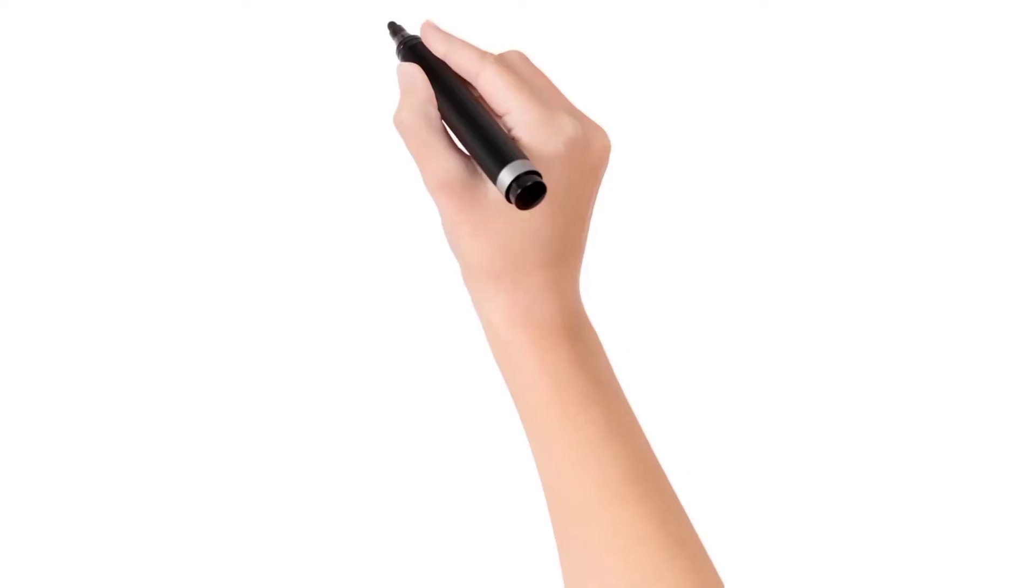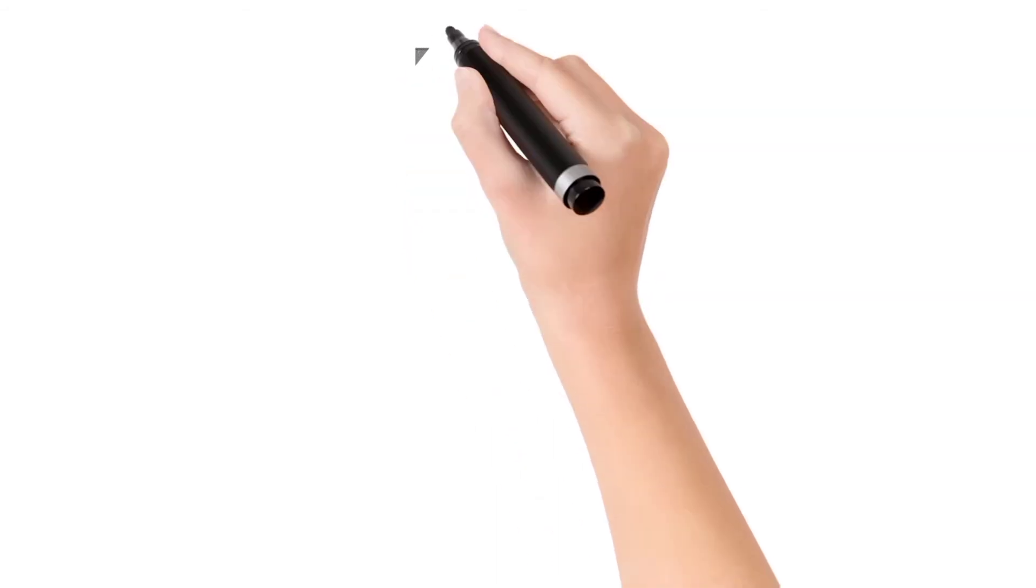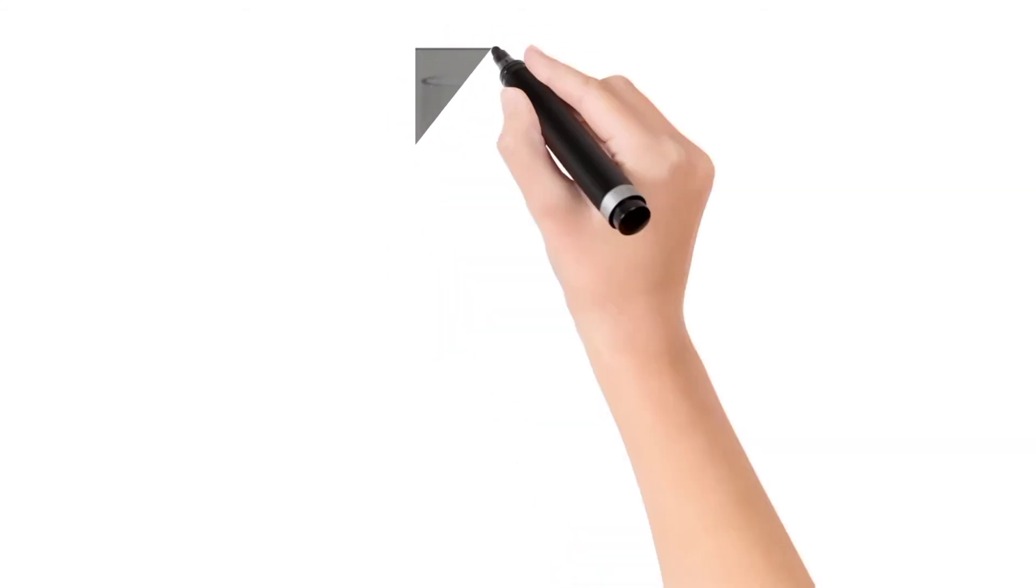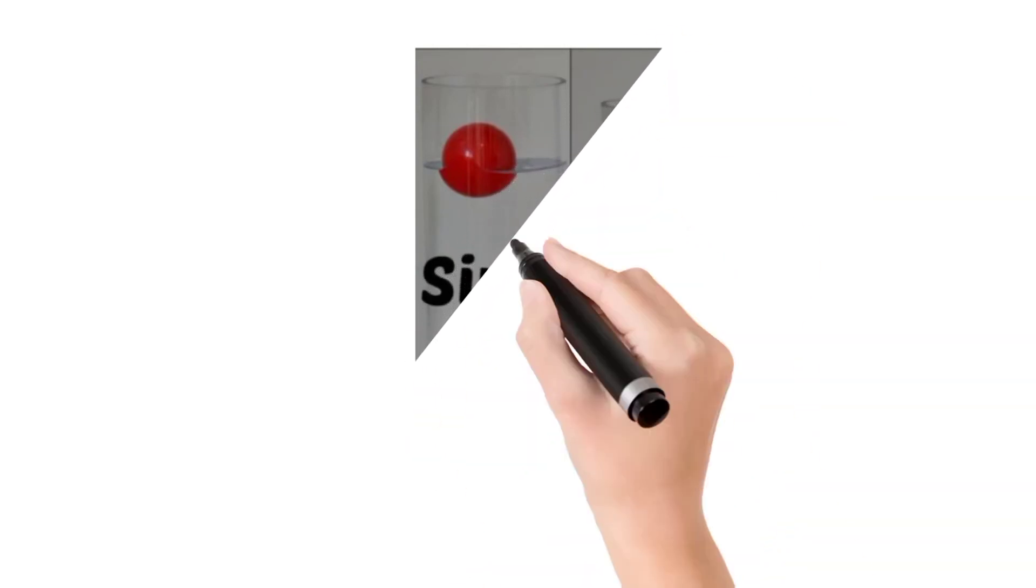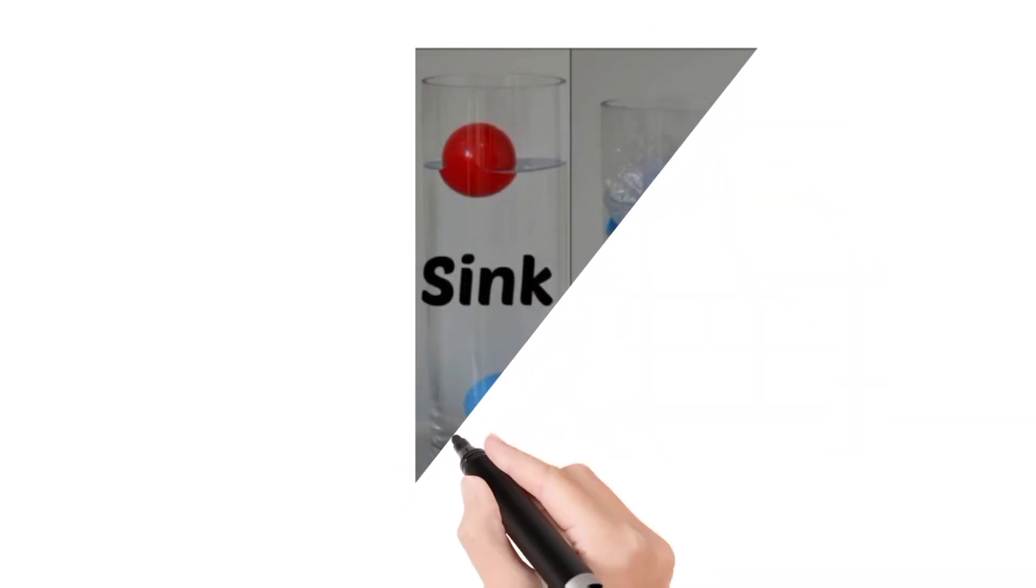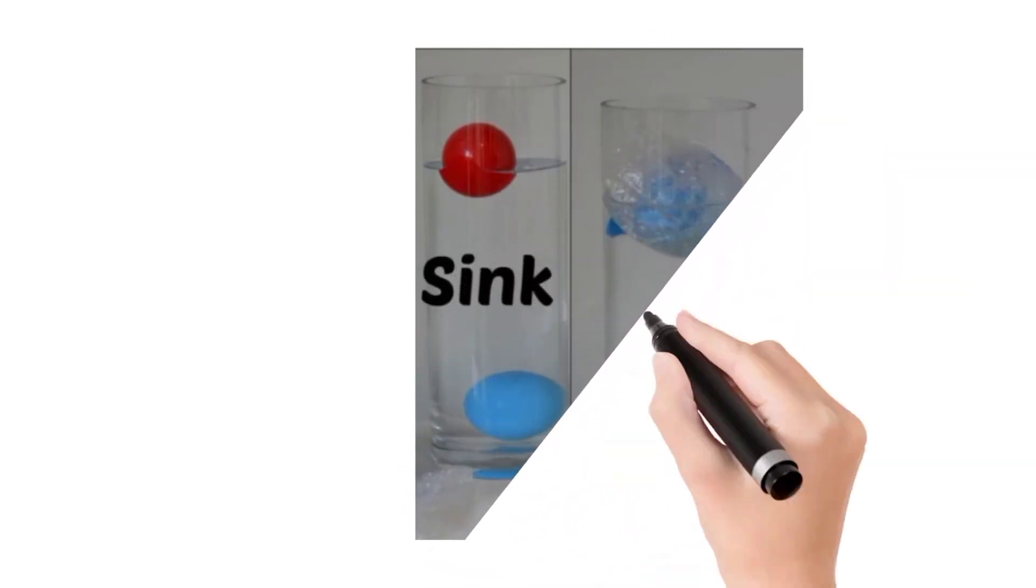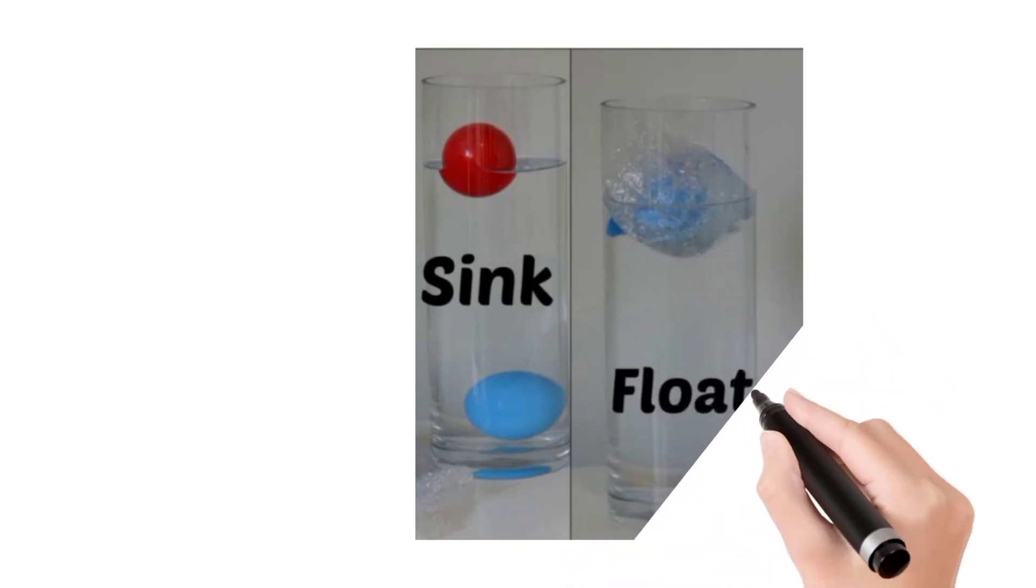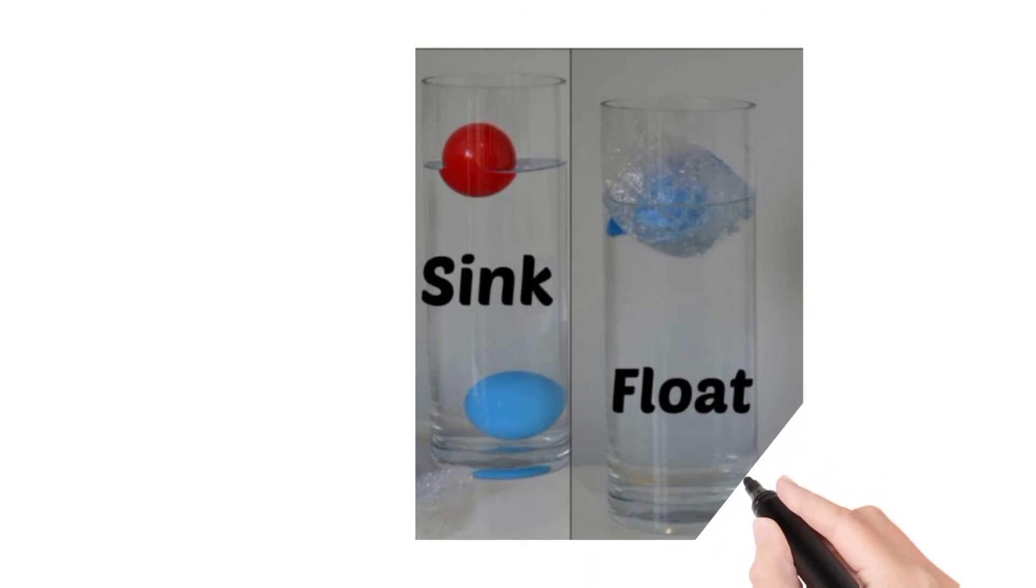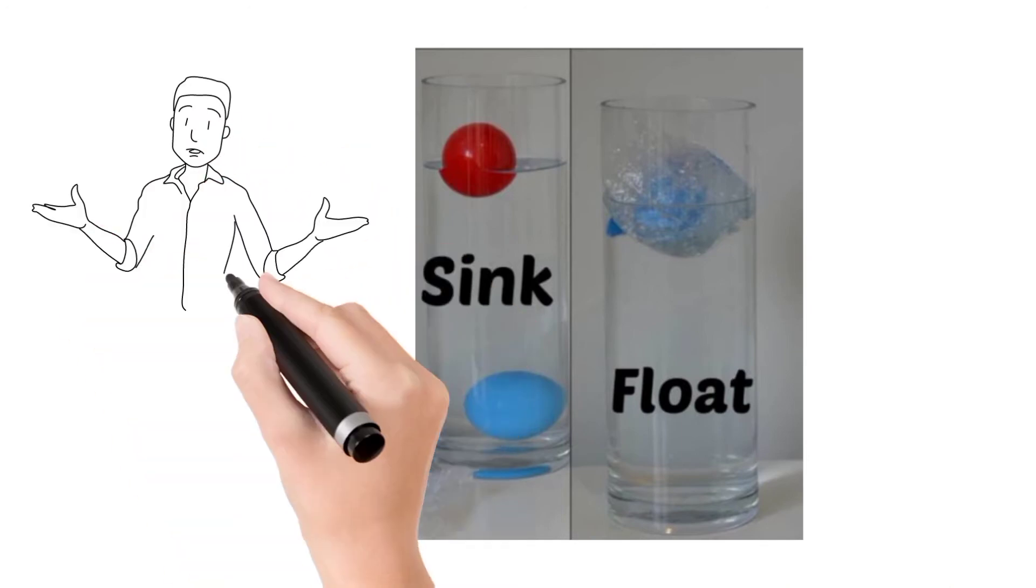When we are discussing the properties of different objects, another very important property: some objects float on the surface of the water and some sink into the water. Heavier objects sink into the water and lighter objects float on the surface of the water.